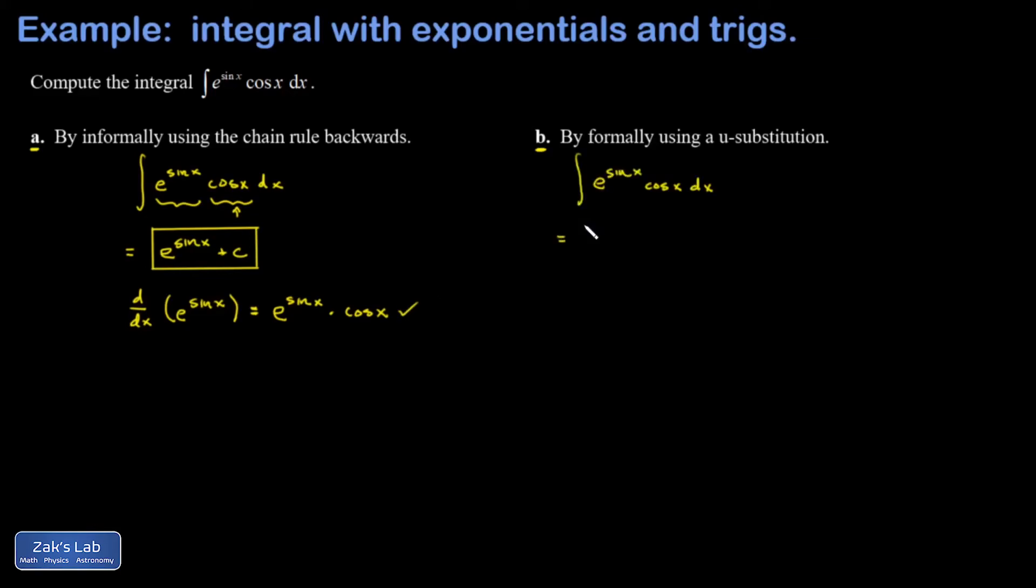When you're using a formal u substitution, you still have to recognize what the inner function is. So I still have to see that sine x is the inner function here, and that I have the derivative of that hanging around right next to it. So I'm going to say let u be that inner function, sine x.